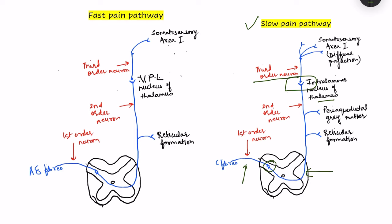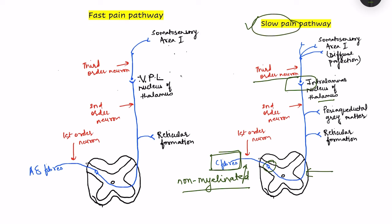The first difference is that the first order neuron in the slow pain pathway is the C fibers, which are slow and non-myelinated. This is why it is a slow pain pathway — this pain is perceived approximately 1 second after injury, whereas fast pain is perceived within 0.1 seconds. The time taken for information to travel via the neospinothalamic tract is much faster compared to the slow pain pathway.